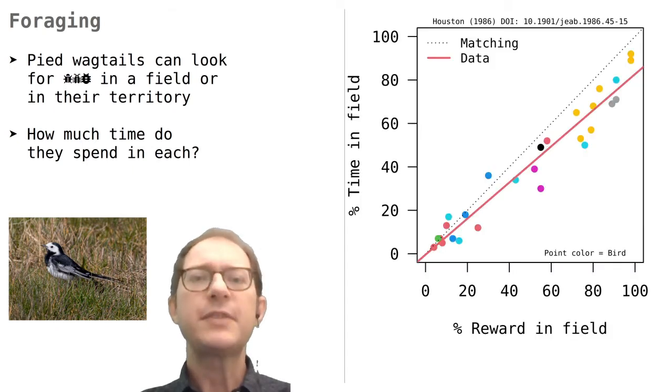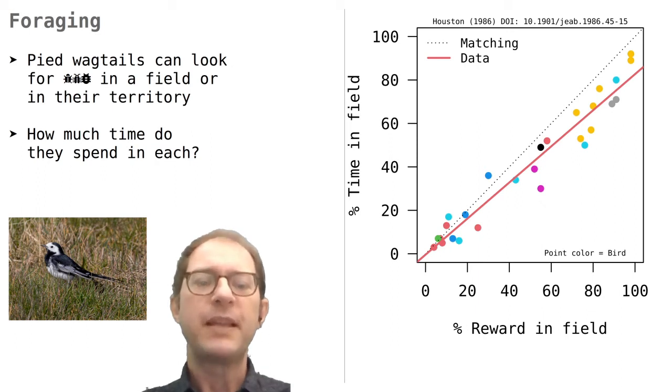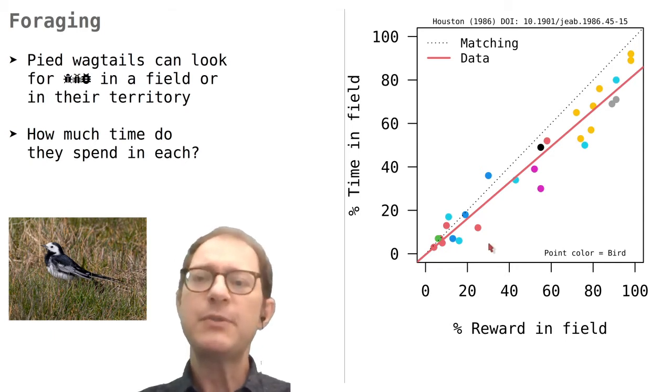And these are the results, plotting time spent in the field as a function of how much reward was obtained in the field. Each data point represents one day, and each color is a different bird. We can see overall that the birds could adjust their behavior pretty well, spending more time in the field on days that they could capture more bugs in the field.